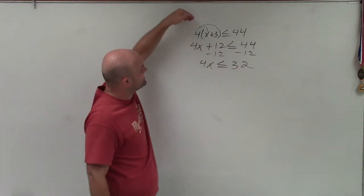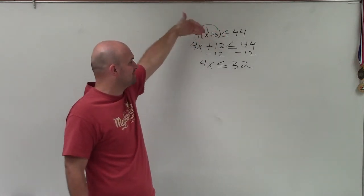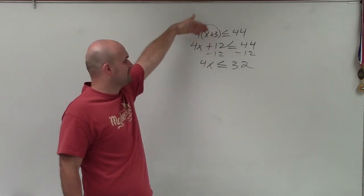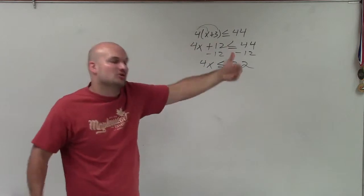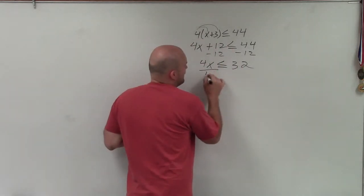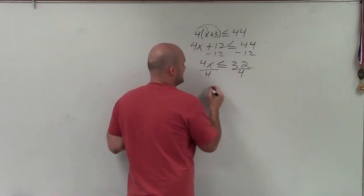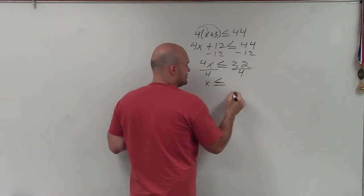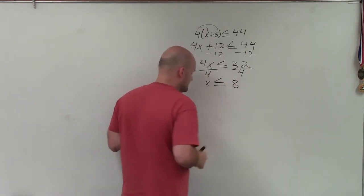All I did is apply that to get it to a two-step equation — always undo addition and subtraction first. Now I need to undo multiplication of x by dividing by 4 on both sides, and therefore I have x is less than or equal to 8.